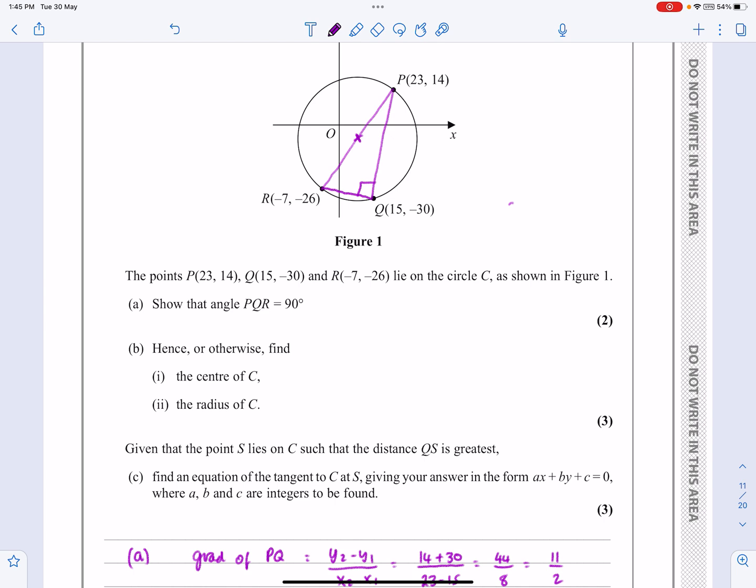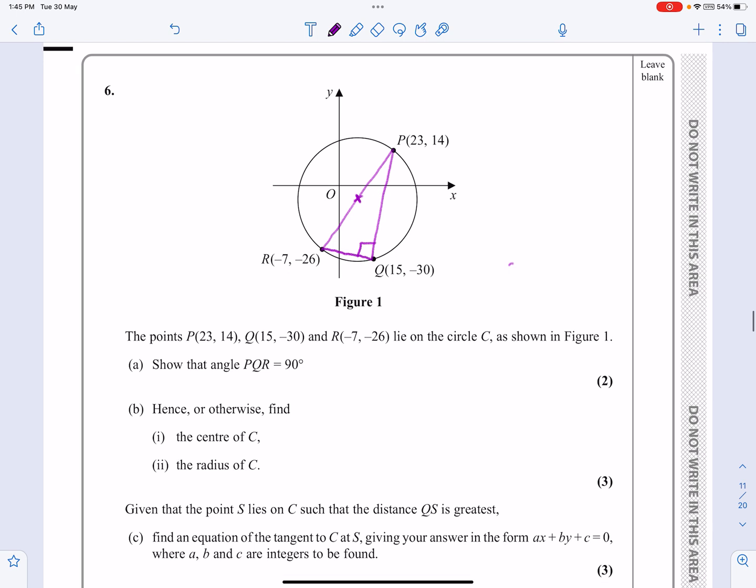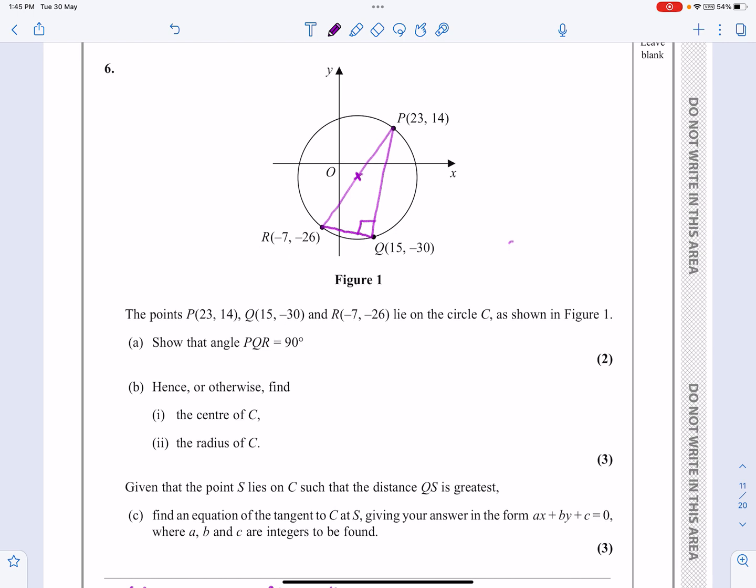Right, what's this saying? Given that the point S lies on C, okay, so it's on the circumference somewhere, such that the distance QS is the greatest. Okay, yeah, nice little question this one here then. So hopefully you're aware of the fact that if that's true, QS, if it's going to be on C and be the biggest value it can possibly be, it needs to be what I've just drawn there directly the other side of the circle from Q passing through O so that QS is the diameter. The diameter is obviously going to be the longest distance that two points that are coordinates on the edge of a circle can be.